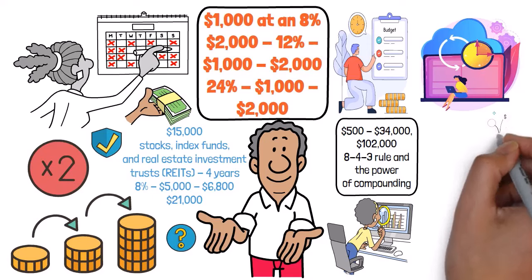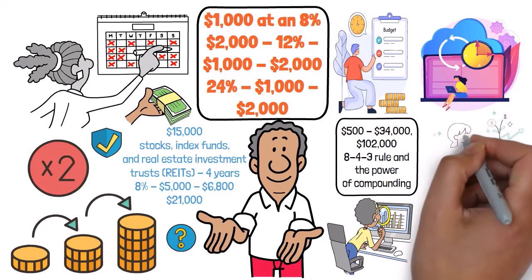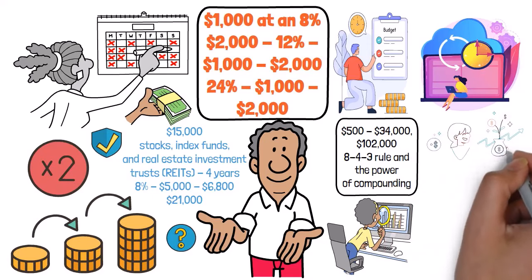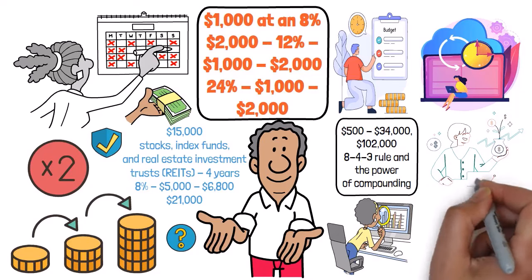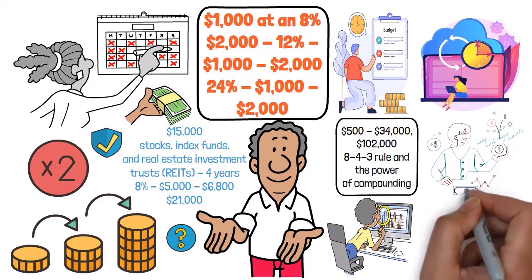And don't forget to reinvest your earnings. Instead of pocketing those dividends, interest payments, or capital gains, put them right back into your investment portfolio. This is like feeding your garden with fertilizer. It helps your investments grow faster and stronger over time, thanks to the power of compounding.